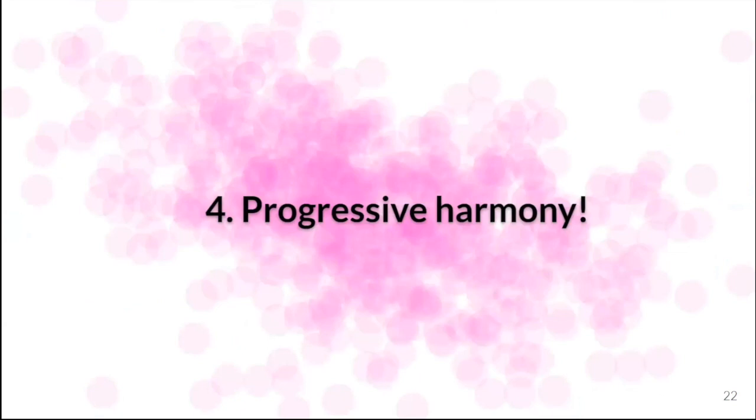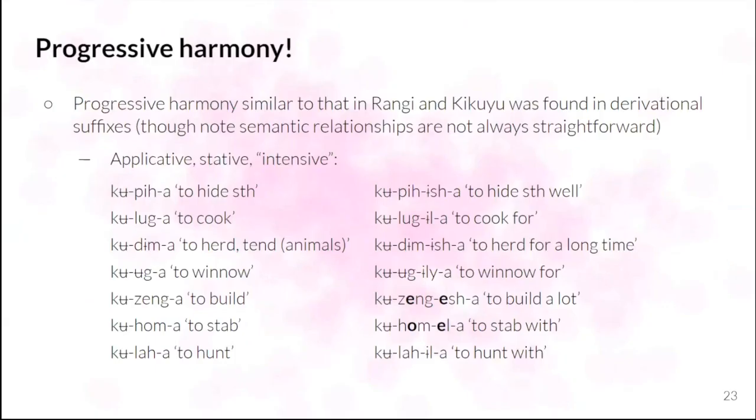So progressive harmony. So in a nutshell, I found progressive harmony that is very similar to what we get in Rangi and Kikuyu. So with, for example, derivational suffixes, like the applicative, the stative, and what, for want of a better label, I've here termed the intensive, we get this degree 2 front vowel lowering to a degree 3 vowel. So we've got here in the verb to build and to stab, we've got these two extensions, the intensive and the applicative being lowered.